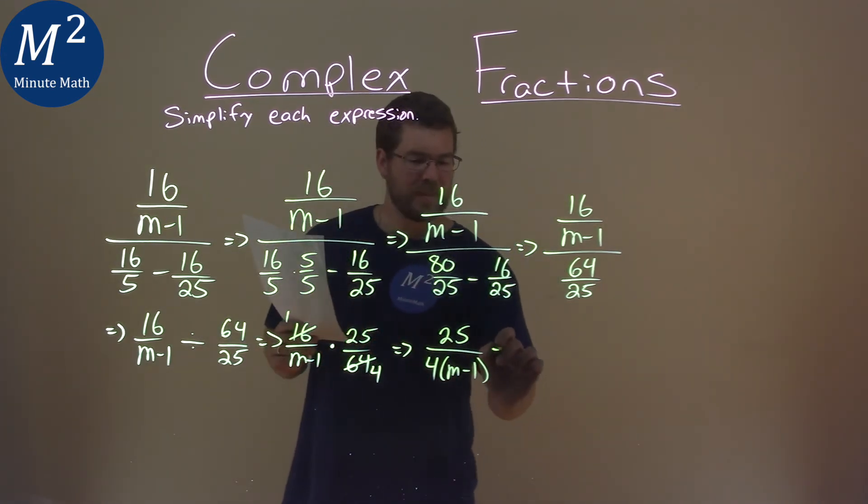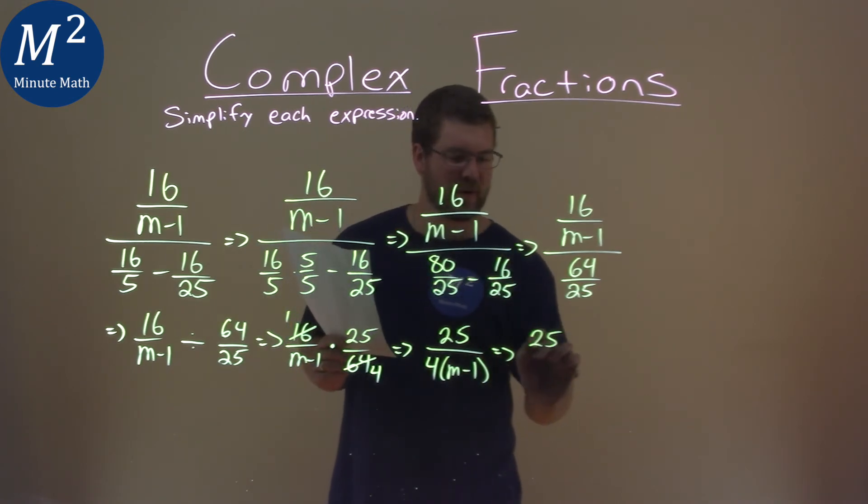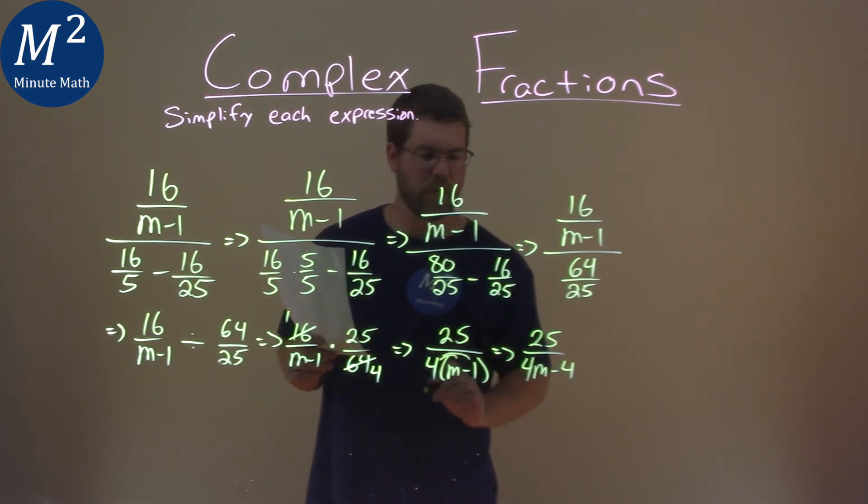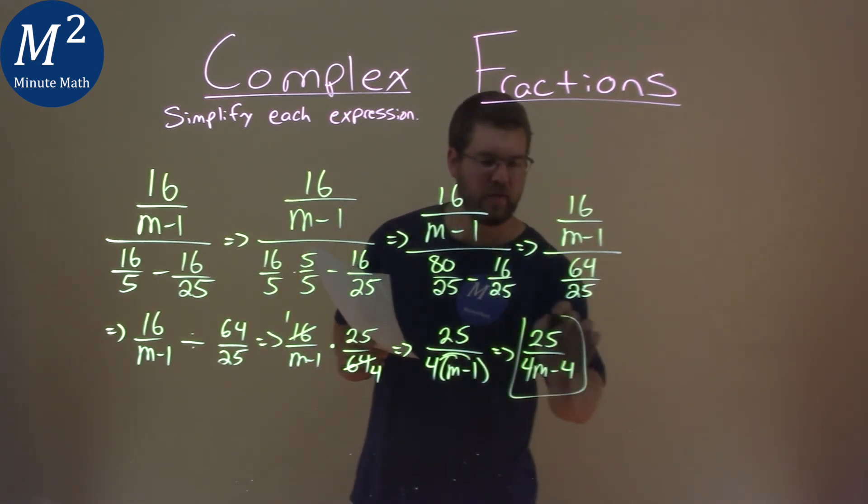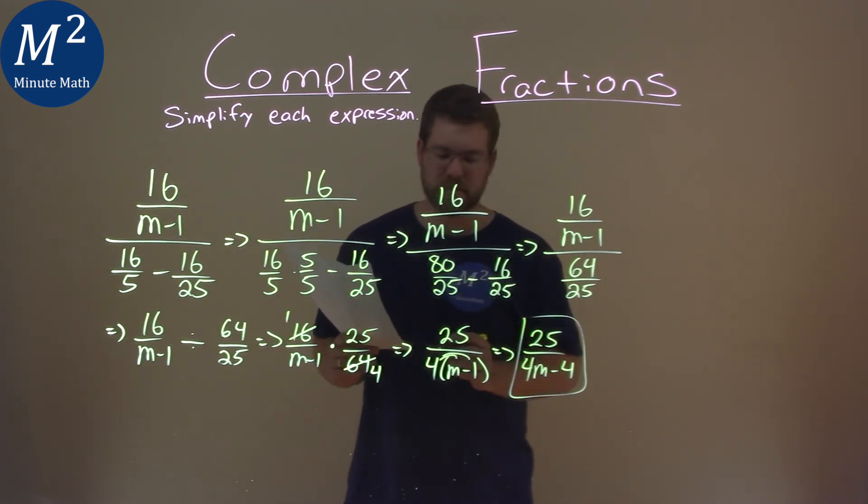And this almost simplifies. We have one more step here: 25 is still in the numerator, distribute the 4 to both parts, 4m minus 4. We distribute the 4 to both parts. And now we're pretty much done. Our final answer here is 25 over 4m minus 4.